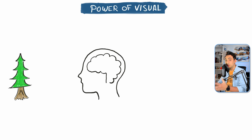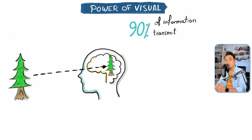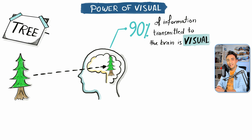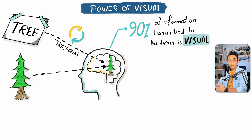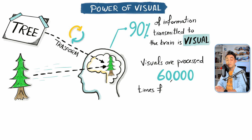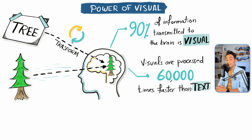If we see a tree, our brain stores it as a visual image. Studies say that 90 percent of the information transmitted to our brain is visual. But if we read the word 'tree,' our brain has to transform it into a visual before storing it, which is much slower. In fact, the human brain processes visuals 60,000 times faster than text.